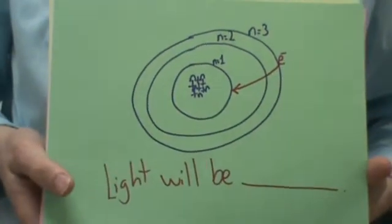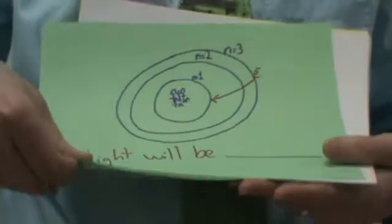So as electrons fall down in energy levels, you're going to have light emitted as opposed to being absorbed.